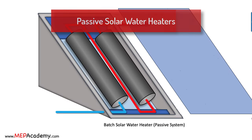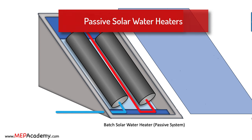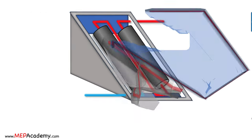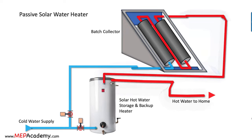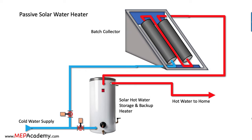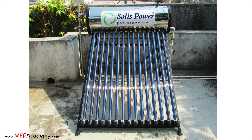A passive solar water heater operates without the need for mechanical pumps or electrical components. These systems are less expensive than active systems but are usually not as efficient. Without the need for moving parts, these systems can be more reliable and last longer.